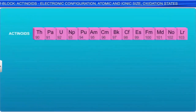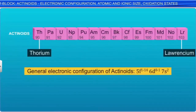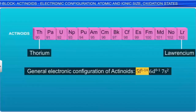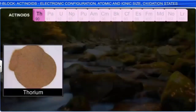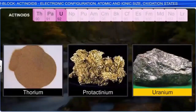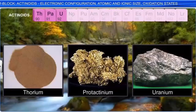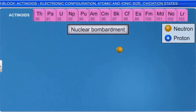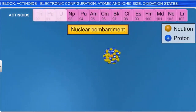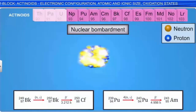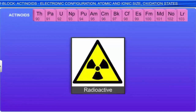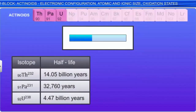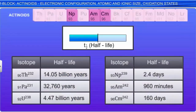The 14 elements from thorium to laurentium, in which the differentiating electron enters the 5f orbital, are called the actinoids. Only the first three elements, namely thorium, protactinium and uranium, occur in nature. The other elements are made artificially by nuclear bombardment. All the actinoid elements are radioactive. The first few members have relatively long half-lives; however, the remaining members have half-lives ranging from a few days to a few minutes.